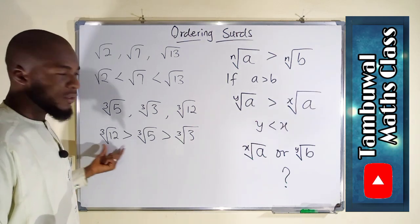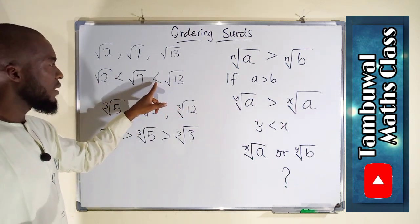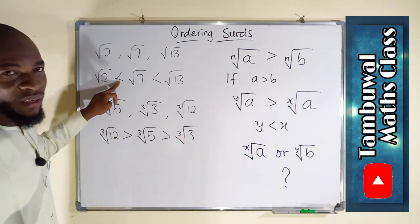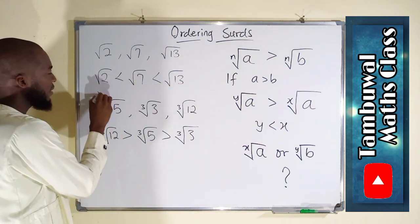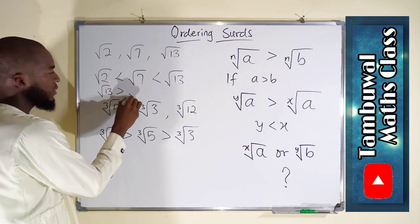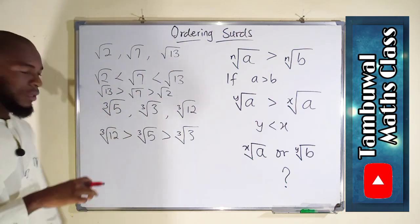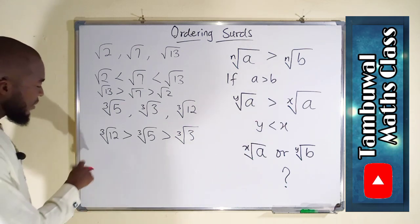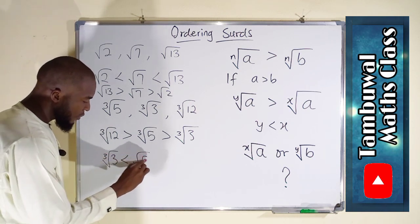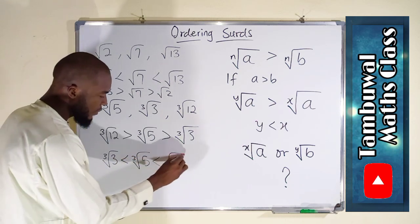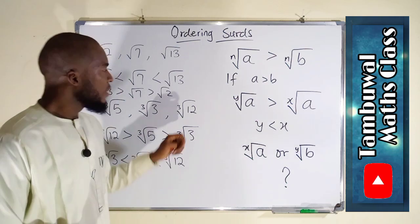In descending order you start from the highest to the lowest; in ascending order you start from the least to the highest, but the direction of the inequality changes. The descending order uses greater-than signs, while ascending order uses less-than signs. For the square root example in descending order: root 13 > root 7 > root 2. For the cube root example in ascending order: cube root of 3 < cube root of 5 < cube root of 12.